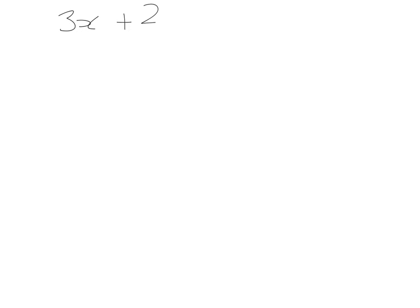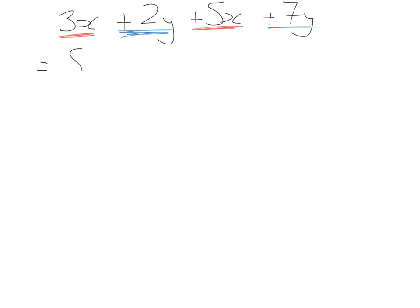Now we're going to get into collecting like terms. When you're collecting like terms, that relates to adding or subtracting algebraic terms within an expression. For example: 3x plus 2y plus 5x plus 7y. Underline all the x's and in a different colour underline all the y's. Then 3x plus 5x gives 8x, and 2y plus 7y gives 9y.